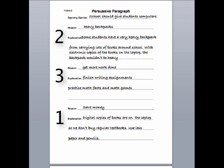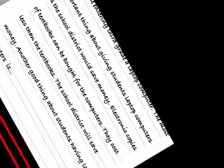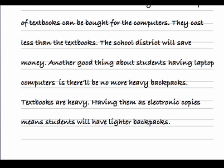Now write a sentence using reason two from your graphic organizer. Begin your sentence with words that show your thoughts are organized, such as 'My second reason is…' or 'Another good thing about students having laptop computers is…' Then write the explanation for reason number two — again, explanations can be two or three sentences long.